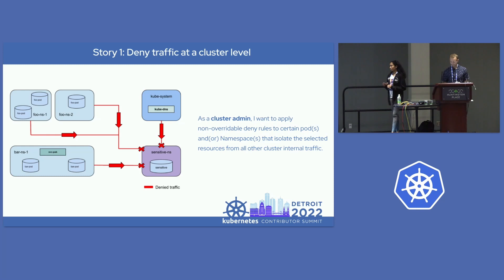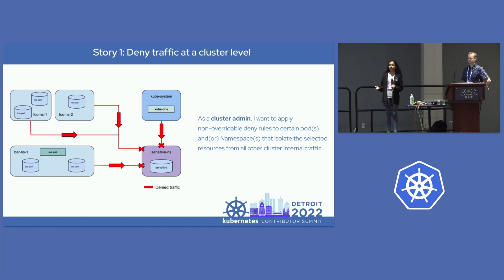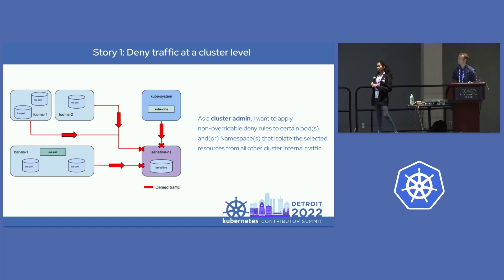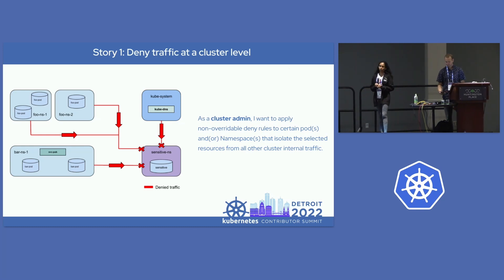The first user story is being able to deny traffic on a cluster-wide level. As a cluster administrator, you want to say that a certain set of pods or namespaces cannot talk with any other namespace, and enforce this at cluster scope. Network policies allow this at a namespace level, but as an admin you want rules that cannot be overridden by tenant owners or app developers. For example, you might have a security-sensitive namespace and want to deny any namespace in the cluster from talking to it — ANP allows you to define these rules easily.